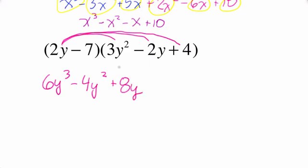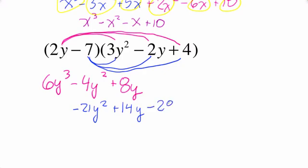Now to do the next three multiplication steps, I'm going to write them underneath the first three multiplication steps. I'm going to stagger them a little bit. Negative 7 times 3y squared is negative 21y squared. So I'm going to anticipate combining like terms and write my negative 21y squared underneath the other y squared. Now our fifth multiplication step is negative 7 times negative 2y. That's positive 14y. And again, I'm going to put that underneath the other y term. In the last multiplication step, negative 7 times positive 4 is negative 28.